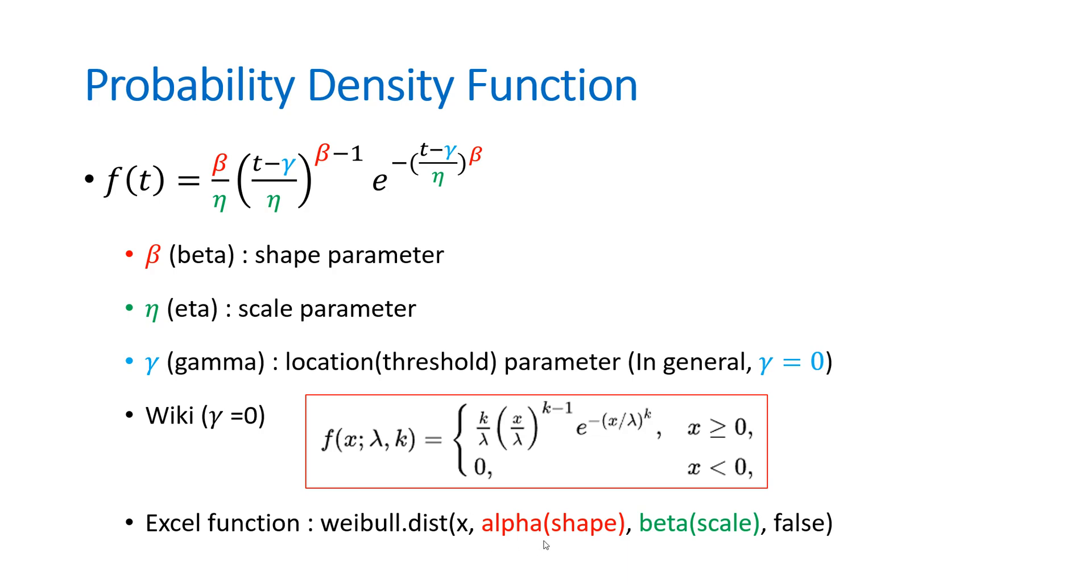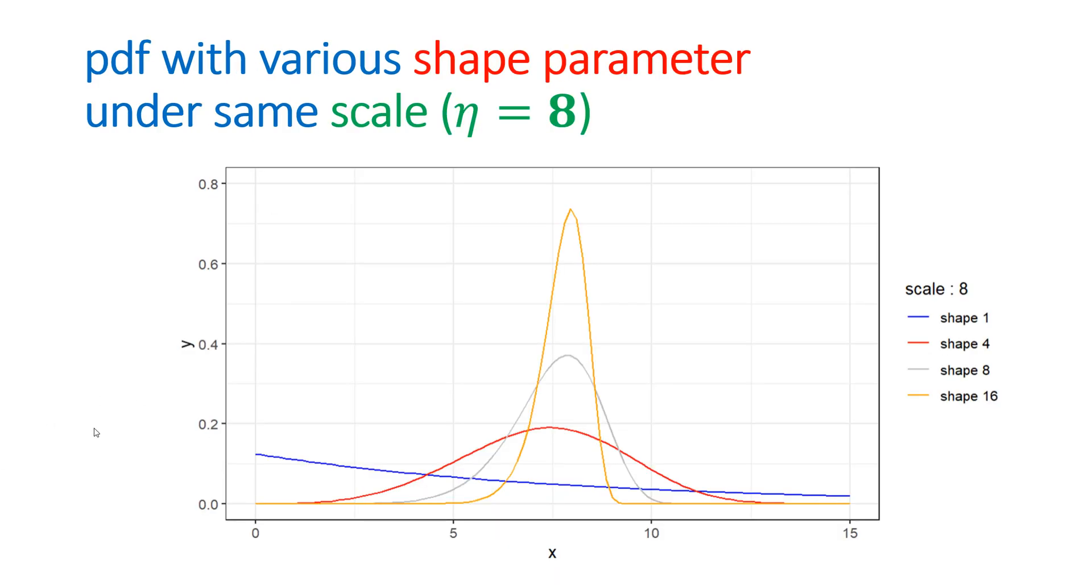Let's simulate some results while changing scale parameter with fixed shape parameter. As you can see, after fixing scale as 8 and if you change shape from 1 to 16, in scale 8 times 8 value, it shows highest probability. And the orange curve shows highest peak because the shape parameter takes value at 16.